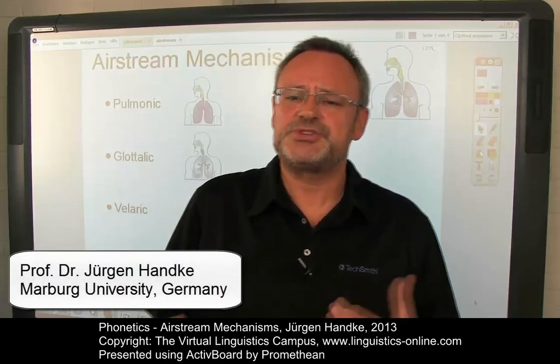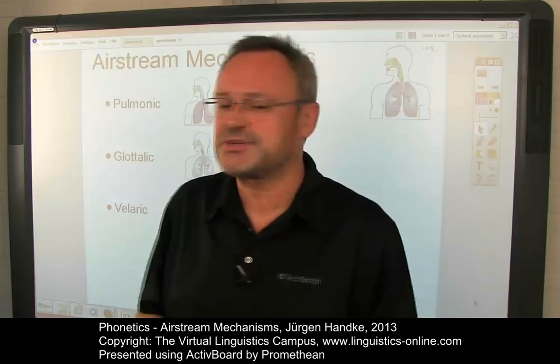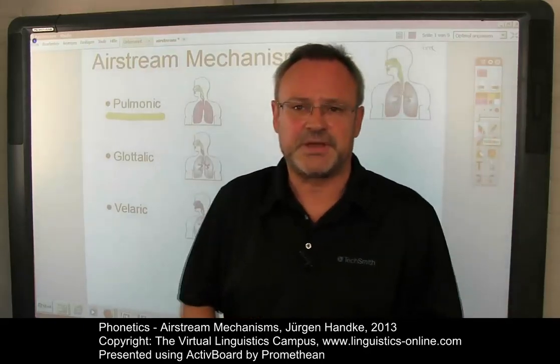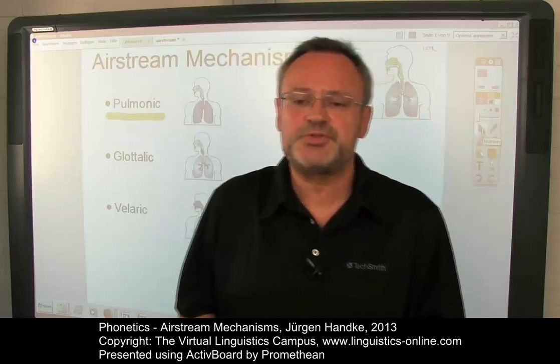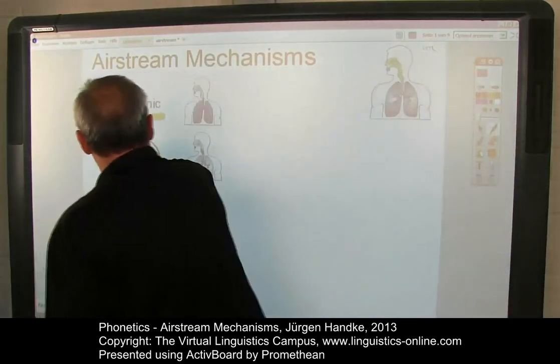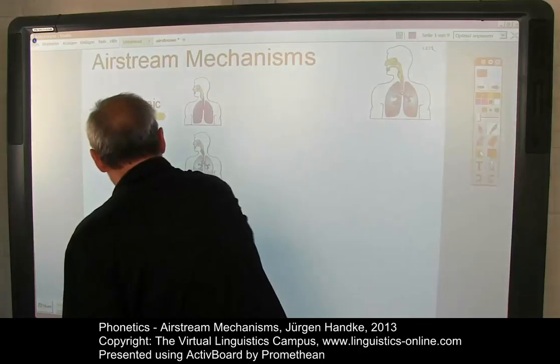In the e-lecture Speech Anatomy, we discussed the central mechanisms of speech production, among them the respiratory system and the production of pulmonic air. In fact, in most languages, the majority of speech sounds is initiated by outward-going air from the lungs — that is, by a pulmonic airstream, which we are going to discuss first in this e-lecture. However, there are additional ways of producing an airstream, such as the glottalic airstream where a glottalic closure is the initiator, and the velaric airstream initiated by means of a velar closure.